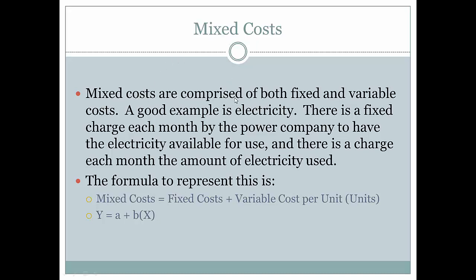Mixed costs are comprised of both fixed and variable costs. A good example is electricity: there is a fixed charge each month by the power company to have electricity available for use, and there is a charge each month for the amount of electricity used. The formula is: mixed costs (Y) equal fixed costs (A) plus the variable cost per unit (B) multiplied by the number of units (X).